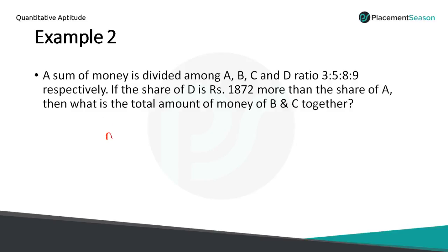So here we have given A:B:C:D equals 3:5:8:9.